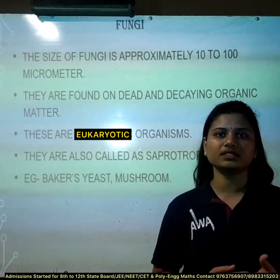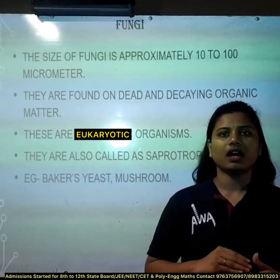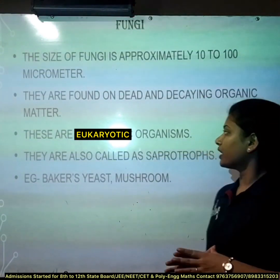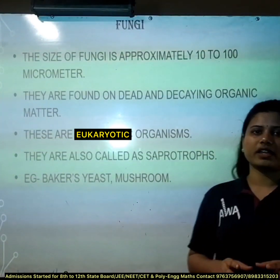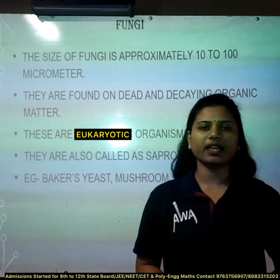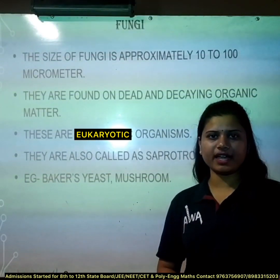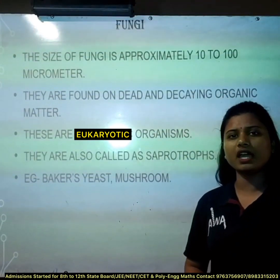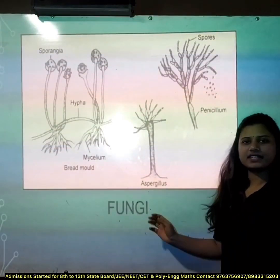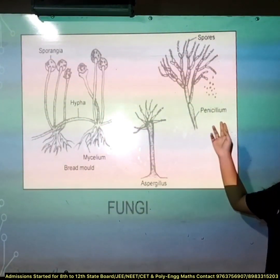Fungi are eukaryotic organisms, meaning they have a well-defined nucleus. They are also called saprotrophs because they feed upon dead and decaying organic matter. Examples of fungi are bread mold, Aspergillus, and Penicillium.